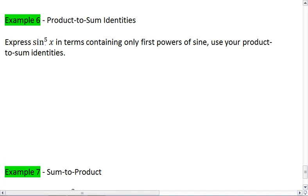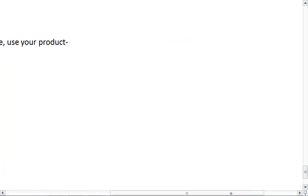In example 6, we're going to be looking at your product-to-sum and sum-to-product identities. If you look on your sheet, these are the two just below your sum and difference formulas, and this is what they tell me.